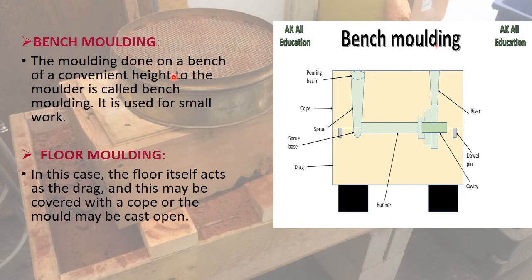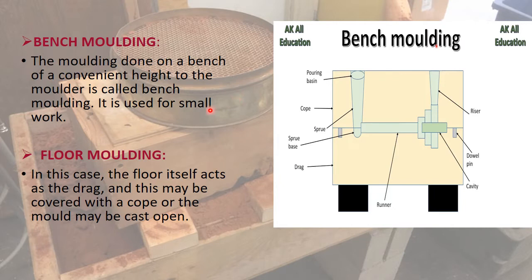In pit molding, the floor itself acts as the drag part, and the cope portion may be rammed in a flask and inverted on the drag, or it may be covered with a cope, or the mound may be cast open. In bench molding, both green and dry sand molds can be made. The molder makes the mold while standing. Molds for both ferrous and non-ferrous castings are made on bench molds.